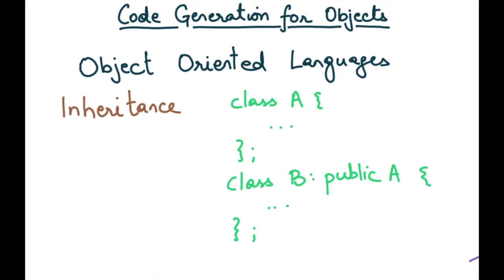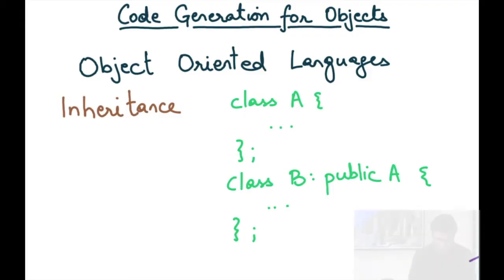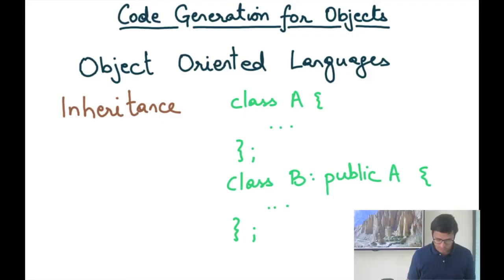Now that we have discussed code generation for a language, let's also discuss how code generation is done for object-oriented languages. In particular, we are interested in figuring out how code generation is done for objects in the presence of inheritance.